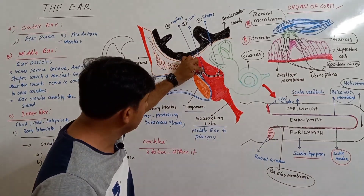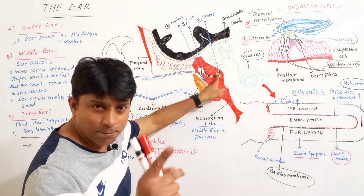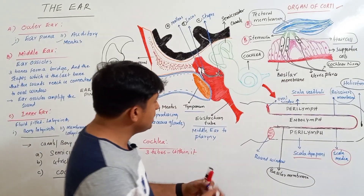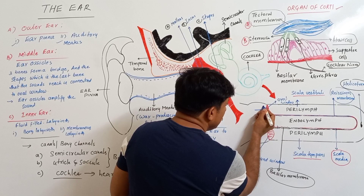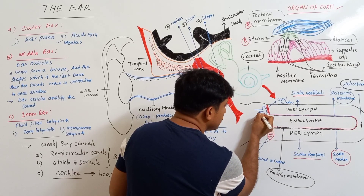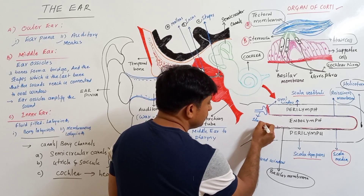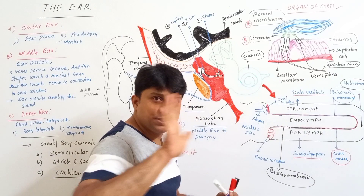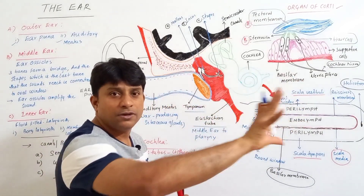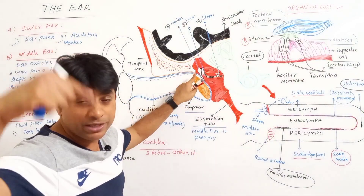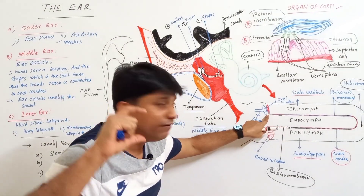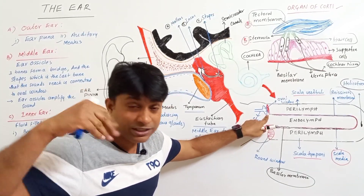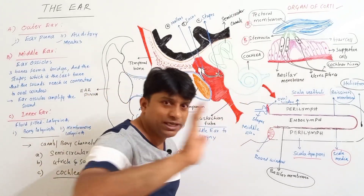From malleus, vibrations are sent to incus — these two bones are joined by a hinge joint. From incus, vibrations are sent to stapes, with a ball-and-socket joint between incus and stapes. The foot plate of the stapes then taps the oval window. The surface area of the tympanum is larger than that of the oval window, so the sound vibrations are amplified 20 times.